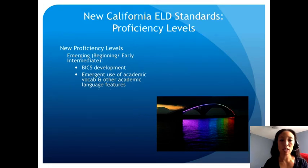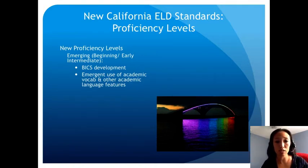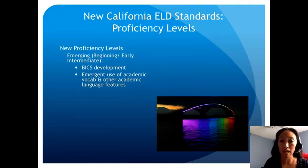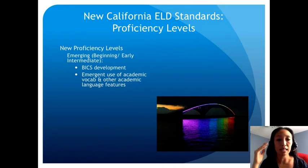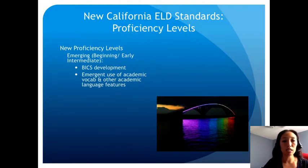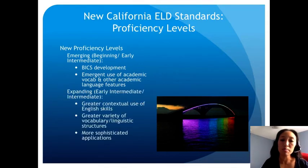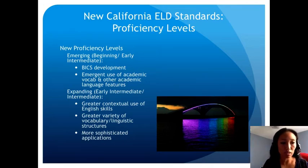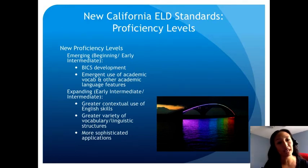The emerging level corresponds to the beginning and early intermediate stages of the old ELD classifications. BICS — Basic Interpersonal Communication Skills — occurs during the emerging level. There is emergent use of academic vocabulary, and students at this level typically progress very quickly, learning to use English for immediate needs while beginning to understand academic vocabulary. Expanding corresponds to early intermediate through the intermediate stage, where students have greater contextual use of English skills, a greater variety of vocabulary and linguistic structures, and more sophisticated language applications appropriate to their age and grade level.